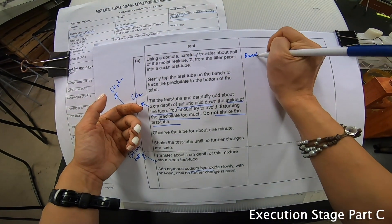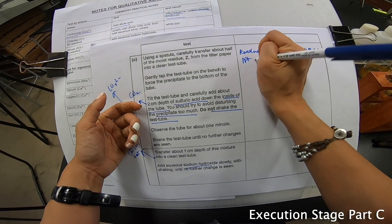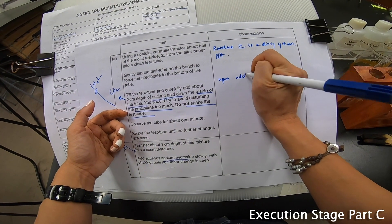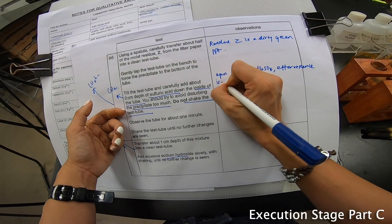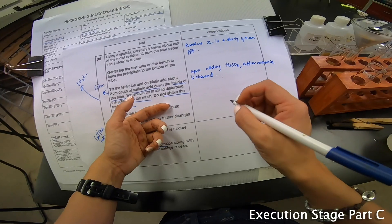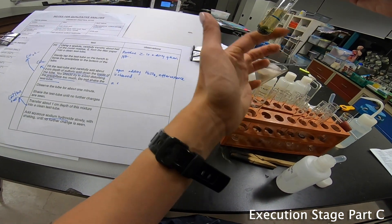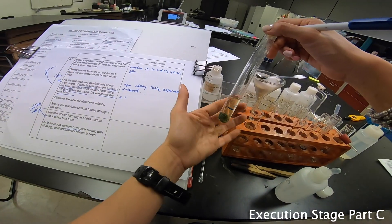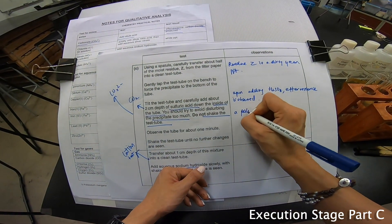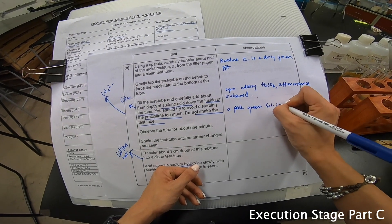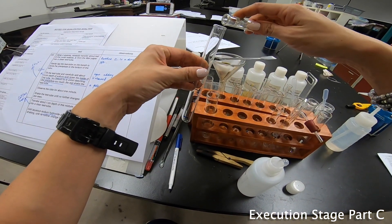Now over here I can say that residue Z is a dirty green precipitate. Upon adding H2SO4, effervescence is observed. I did not shake the test tube. Over here I can see that the solution on top of it is a slightly pale green solution. So I'm going to write down a pale green solution is observed. I'm going to go on to pour this out, the solution out.